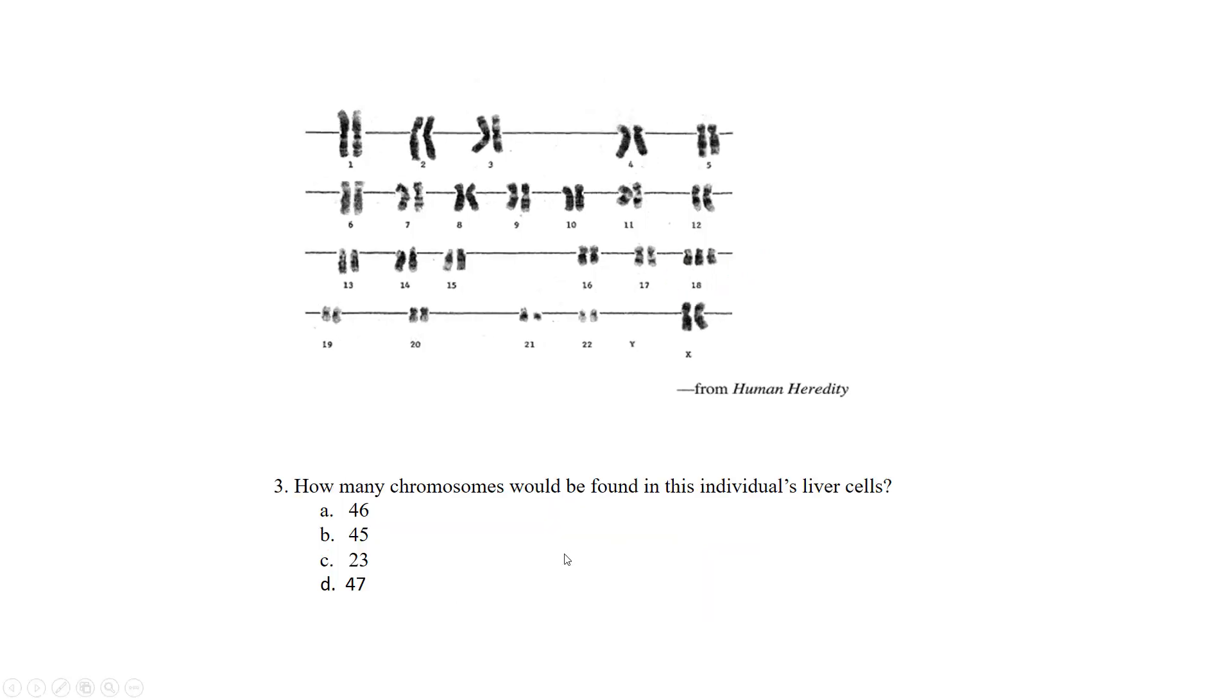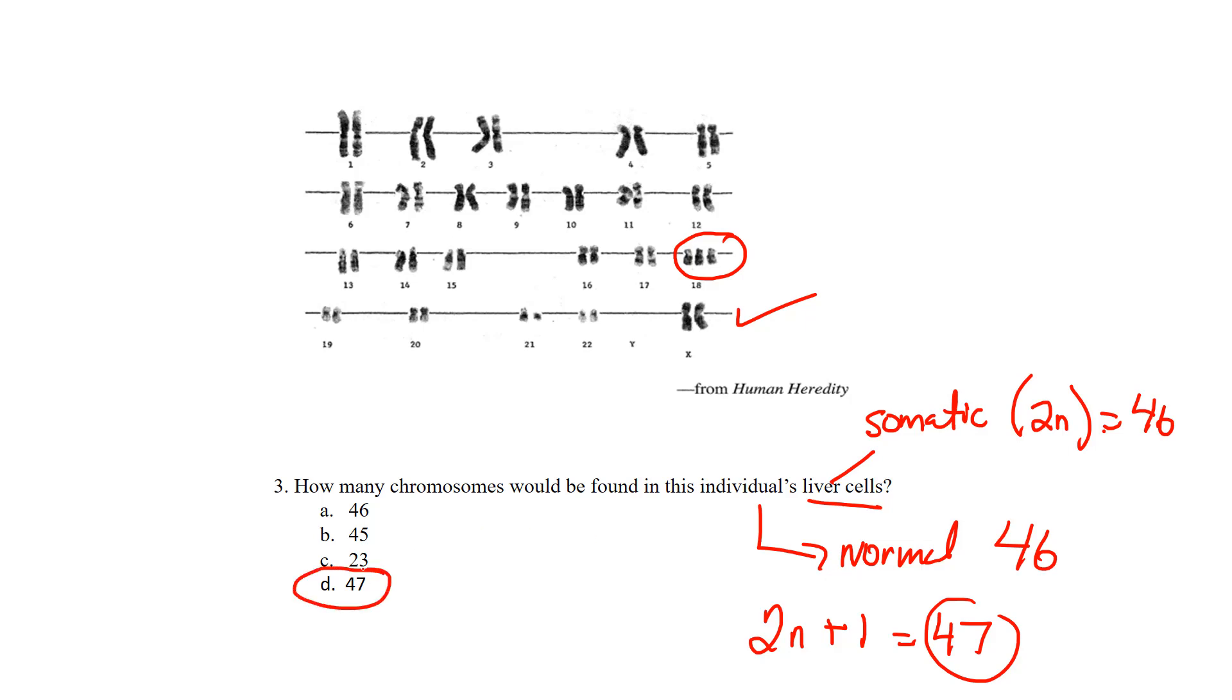Let's look at the last question. How many chromosomes would be in this individual's liver cell? We know liver cells are somatic cells, and somatic cells are always 2N. For a normal individual, we know that all our somatic cells contain 46 total chromosomes. But in this particular case, there was an extra chromosome on the 18th. Normally it's 2N equals 46. But when we have an extra, we show it in the variable 2N plus 1 equals 47. That means in every somatic cell of this individual female, every single somatic cell in her body will contain not 46, but 47 total chromosomes. And that leads us to this answer.